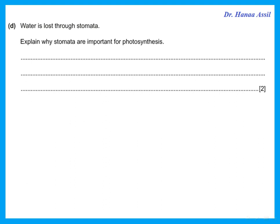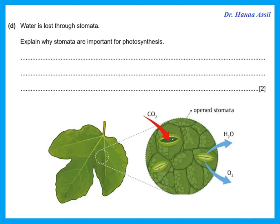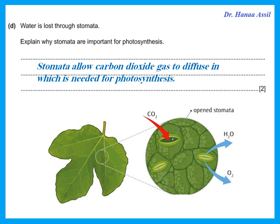Water is lost through stomata. Explain why stomata are important for photosynthesis. Stomata are the tiny holes usually at the bottom of the leaves. Carbon dioxide gas diffuses in through the stomata, and carbon dioxide is needed for photosynthesis.